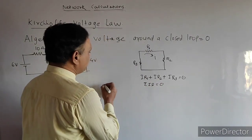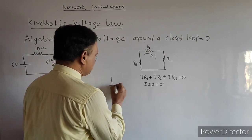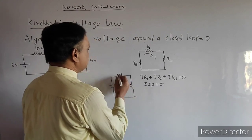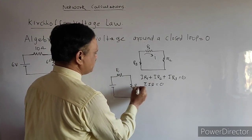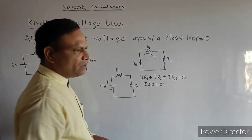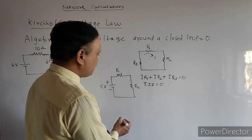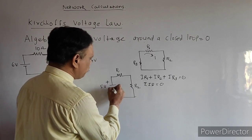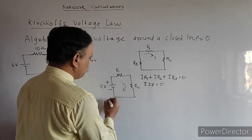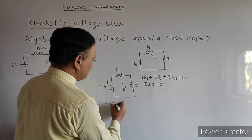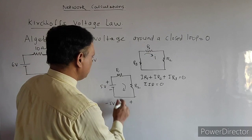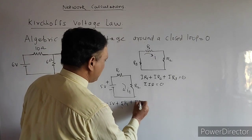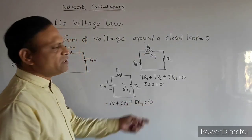Now one thing I would like to tell you: when writing the equation of a network — say resistance R1, resistance R2, with minus and plus terminals and a 5 volt source — start from the battery. Always see from which side the current is entering the battery. From negative to positive side, the current is entering, so we will write minus 5 volt here. The remaining terms will be positive, so IR1 plus IR2 equals zero.